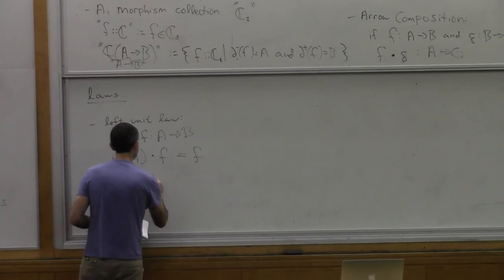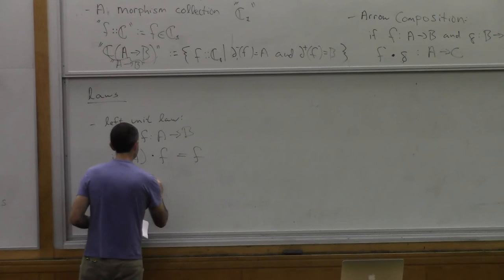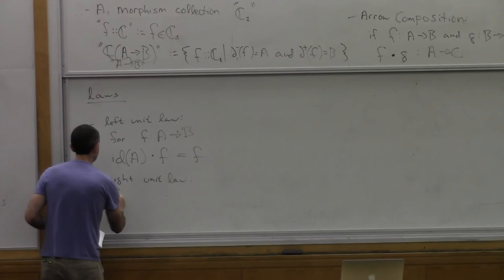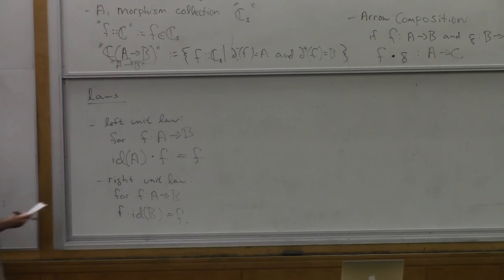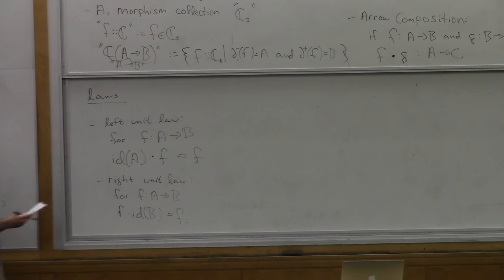Next, we have the right unit law. Again, we have the same arrow. Then if I compose that arrow with the identity arrow on the object B, then I again get that same arrow back.